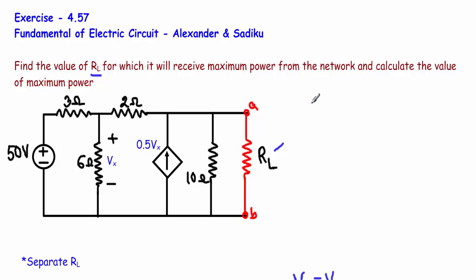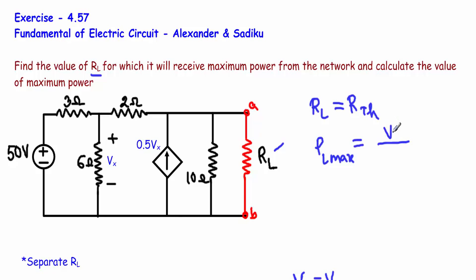When the load resistor will receive maximum power from a network, the value of RL must be exactly equal to the Thevenin resistance. The value of maximum power will be equal to VTH squared divided by 4RTH. So to calculate maximum power, we need to know two quantities: the Thevenin resistance and the Thevenin voltage.